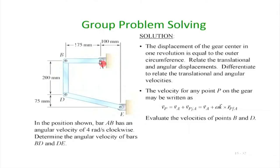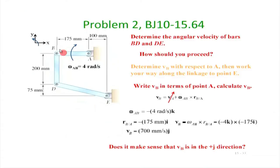We know that the velocity of A is zero. So the velocity of B equals the velocity of A plus omega cross r_B/A. We can write omega as omega times k-hat. Looking at point B, the velocity of point B is the velocity of A — which is zero — plus omega_AB cross r of B with respect to A, the position vector of B with respect to A.